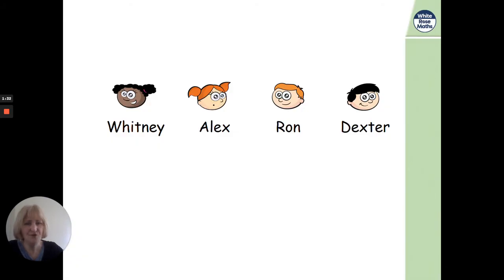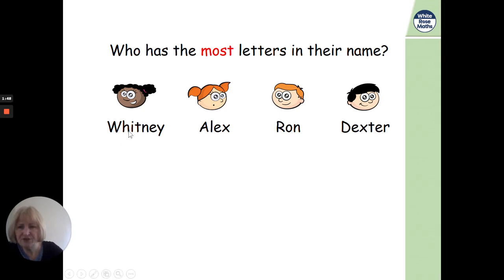Okay, four children. Whitney, Alex, Ron, and Dexter. Who has the most letters in their name? We'll have to count them, won't we? So, Whitney's got one, two, three, four, five, six, seven letters. Alex has got four. Ron's just got three letters and Dexter's got one, two, three, four, five, six. So, who had the most letters? I think it was Whitney, wasn't it? Yeah, that's the biggest number, seven. It's Whitney.